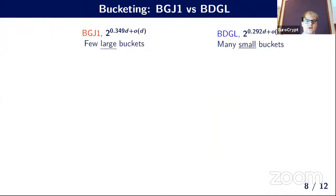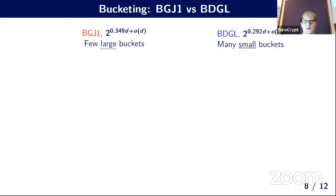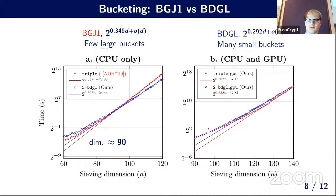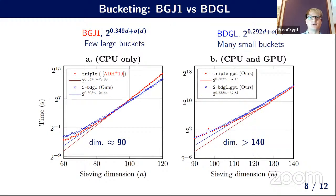Two bucketing methods are compared: BGJ1-style variants, a practical method giving a few large buckets, and BGGL, the asymptotically best known sieve using many small buckets. On CPUs, the crossover between BGJ1 and BGGL lies around dimension 19. However, on GPUs, the crossover has not been achieved even at sieving dimension 140, because the small buckets cause memory bottlenecks preventing optimal parameter selection.